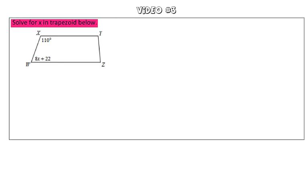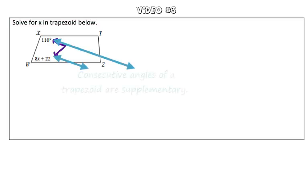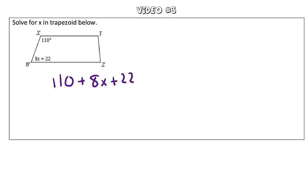In this problem, we are asked to solve for x in the trapezoid below. What we learned about trapezoids is that the consecutive angles sum to 180 degrees. So to solve this problem, we know that 110 plus 8x plus 22 has to be equal to 180 degrees.